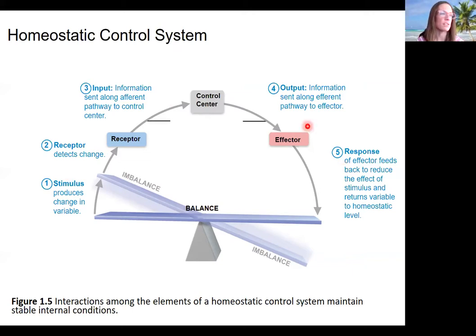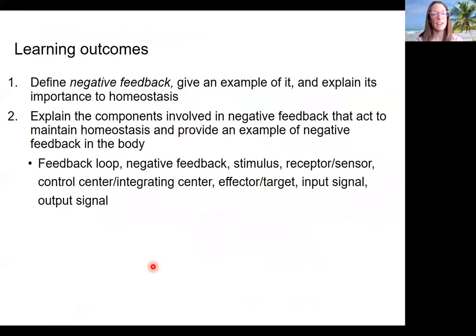And these definitions are the same as what we've already talked about. So again, I won't typically draw this teeter-totter, but I will have you draw out those seven components here. What we've done here is one, define negative feedback, give an example of it, and explain its importance to homeostasis. And two, explain the components involved in negative feedback. So what are the components and describe each component, what's the role of each of those, that act to maintain homeostasis, and provide an example of negative feedback in the body.